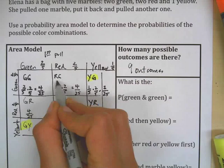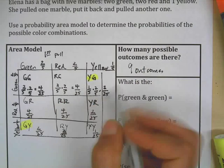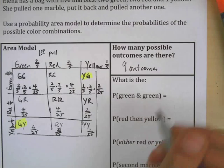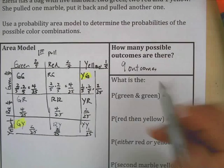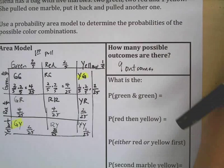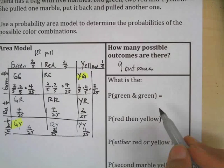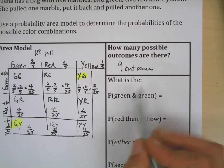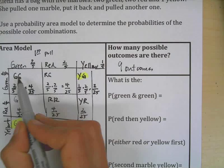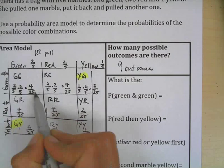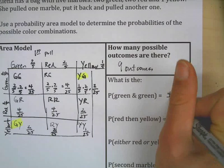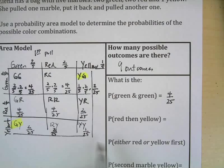Each one of these is a different outcome: green-green, red-green, yellow-green, green-red, and so on. Now, the other thing is how do you interpret this diagram to pull information out? So what's the probability of green and green? So here's green then green, that's four twenty-fifths.